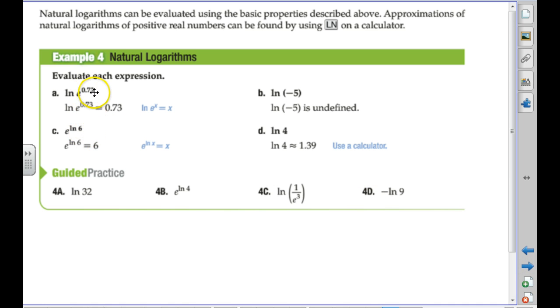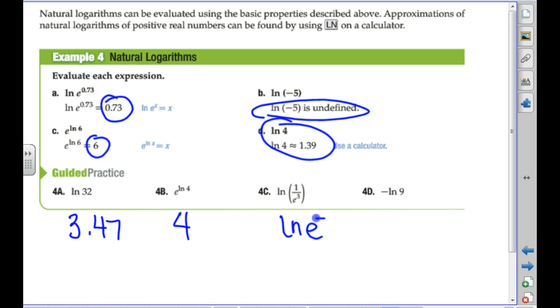So a couple quick examples. L-N and E undo each other, so the answer here is 0.73. Can't take the log of a negative number. L-N and E undo each other, and you get 6. This one you'd have to use a calculator for. So L-N of 32, calculator question. 3.47 to two places? E and L-N do what? Yep, we just get 4. How can I write that as the power of E? Negative 3, yep. And then L-N and E undo each other, so we just get negative 3. This is a calculator question, because we don't know how to do the natural log of 9. It just wants a negative answer, though. Negative 2.2. They're around 7.7.